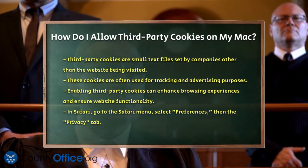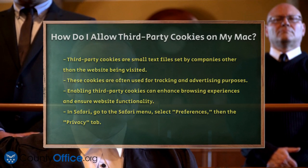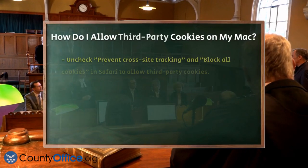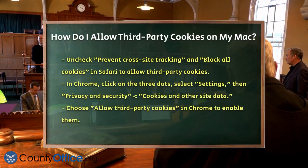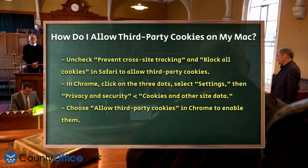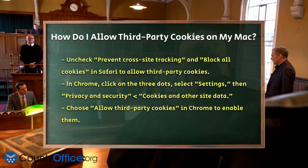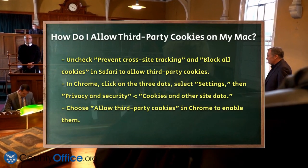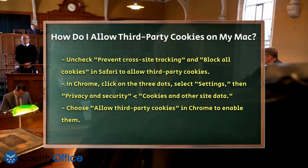Safari. To allow third-party cookies in Safari, you need to make a few adjustments in the settings. Open Safari and click on the Safari menu at the top left corner of the screen. Select Preferences and then click on the Privacy tab. Here, you'll see two important options: Prevent cross-site tracking and Block all cookies. Make sure both of these are unchecked. This will allow third-party cookies to be stored on your Mac.